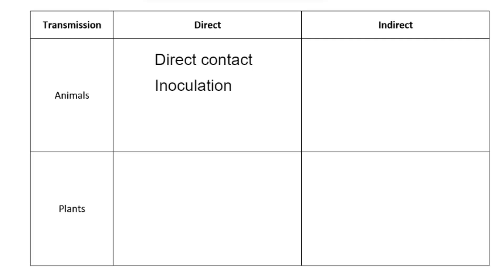Inoculation is another example of direct transmission. Inoculation means there is an opening — for example a wound on the hand or body — where the pathogen can enter. This could be a paper cut where the pathogen enters the bloodstream before it clots, sharing of needles between drug users, or a blood transfusion carried out without screening the blood to ensure it doesn't contain any pathogens.